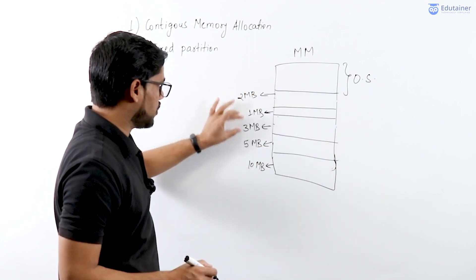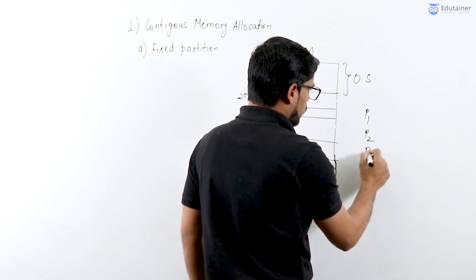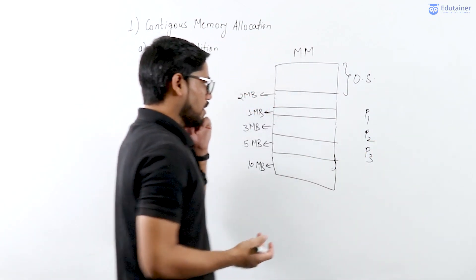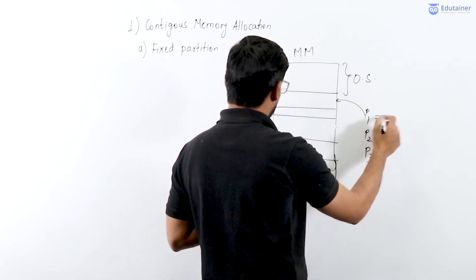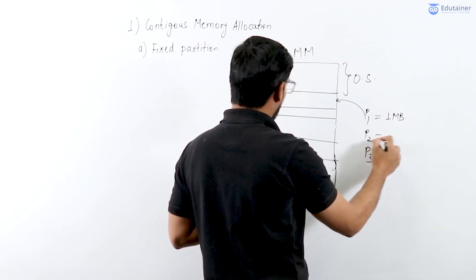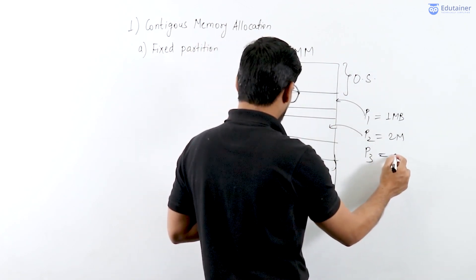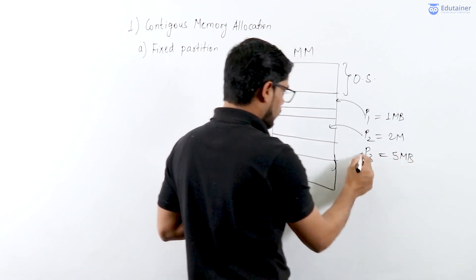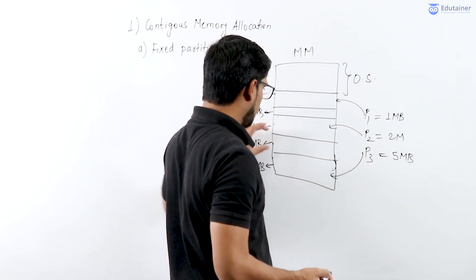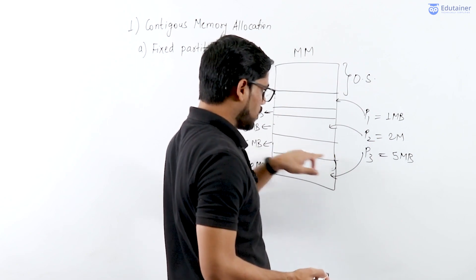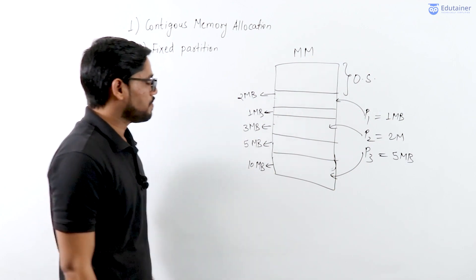When processes like P1, P2, and P3 want to run, they are allocated into these fixed spaces. For example, P1 has size 1MB, P2 has size 2MB — it gets allocated in the 3MB partition, and P3 of size 5MB gets allocated in whichever available partition fits it.